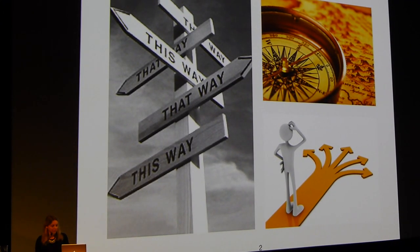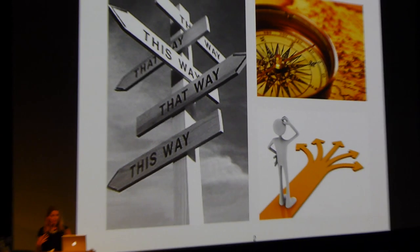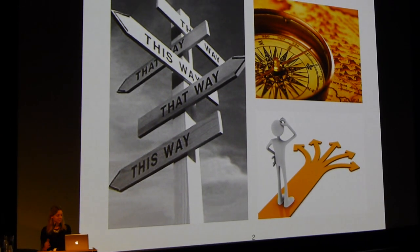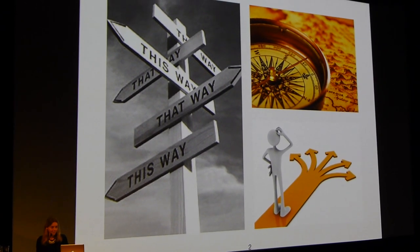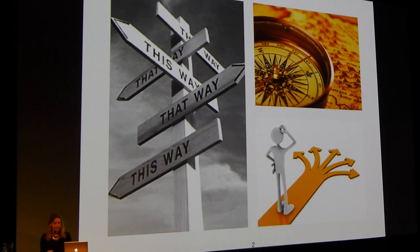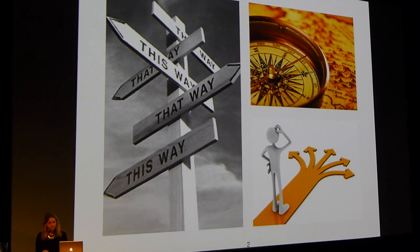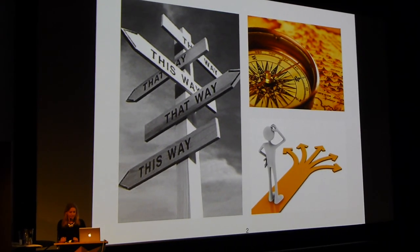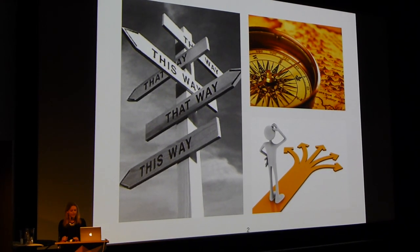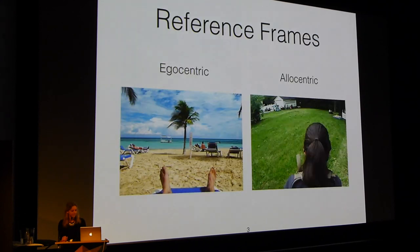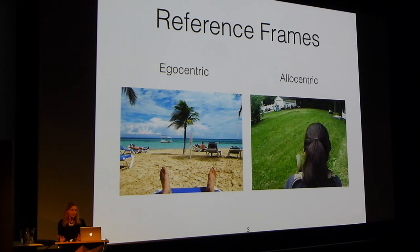In the real world, we're constantly navigating where we are, updating where we are in space — trying to figure out our orientation in space and how to move around. What I want to look at is how we do that in virtual environments. Two different reference frames are egocentric, which is self-to-object, representing locations of objects relative to your own body.